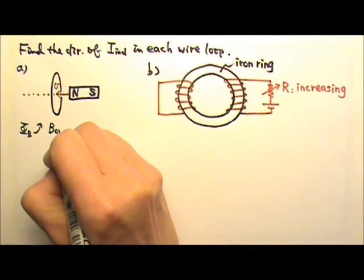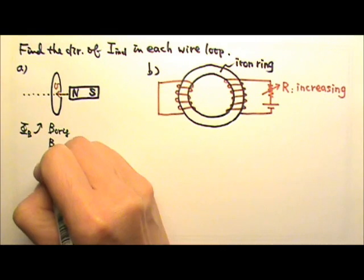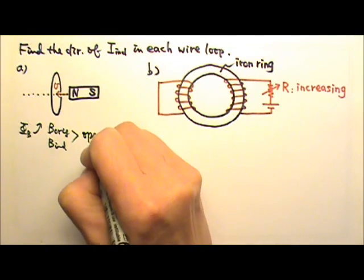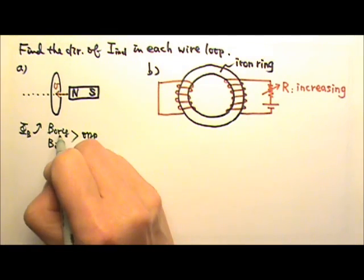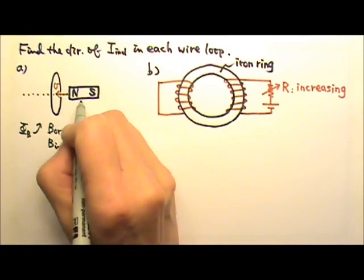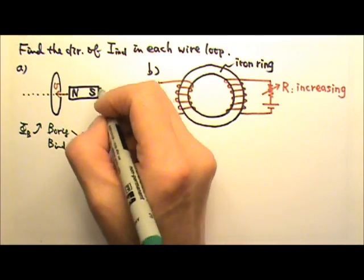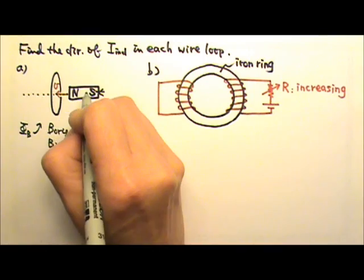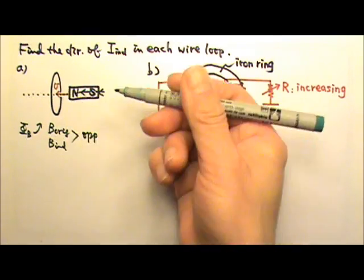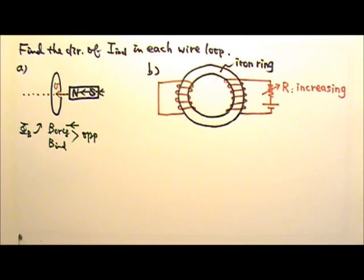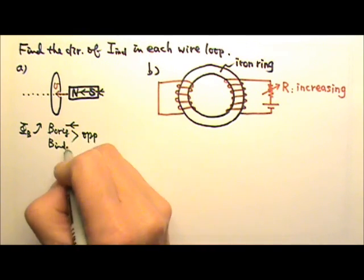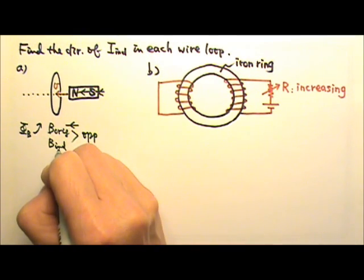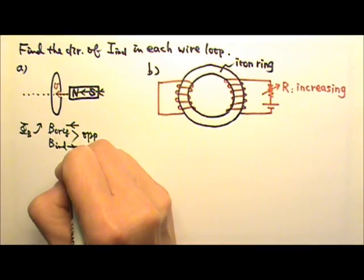That means the original magnetic field and the induced current's magnetic field have to be in opposite directions. The original magnetic field is produced by the magnet, and the magnetic field lines should go into the south, out of the north, so inside the magnet it goes that way. So the original magnetic field goes to the left, and that means the induced current's magnetic field should go to the right.